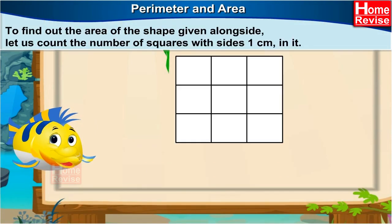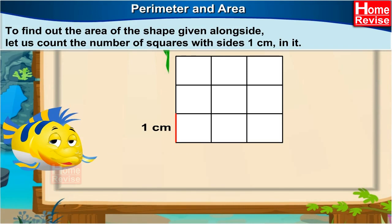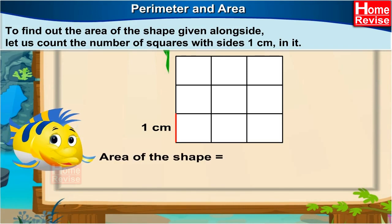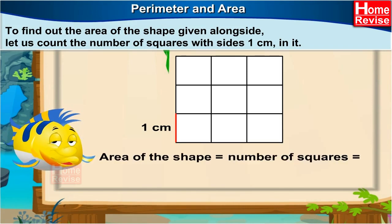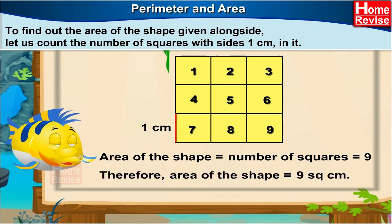To find out the area of the shape given alongside, let us count the number of squares with sides 1 cm in it. The area of the shape is equal to the number of squares, which is equal to 9. Therefore, the area of the shape is 9 square centimeters.